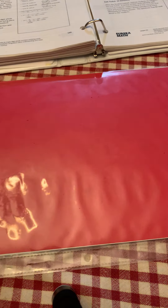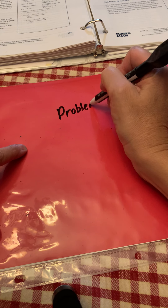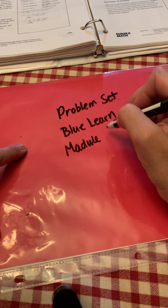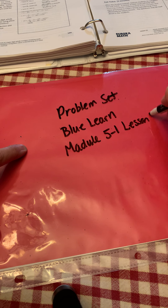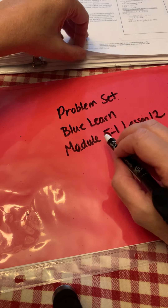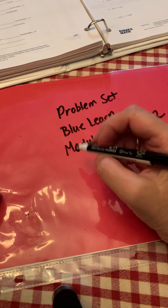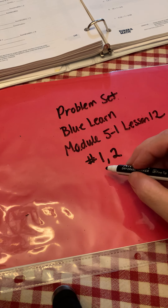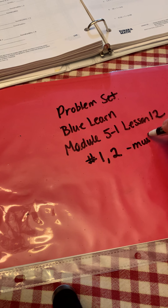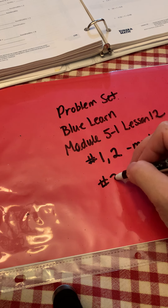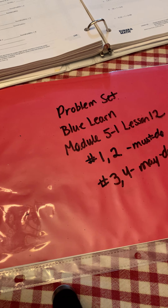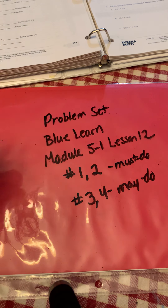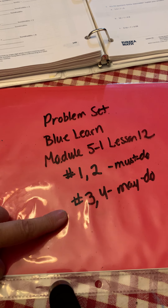Okay, for our next part, I'm going to have you work on your problem set. To find your problem set, you need to go into your blue learn book and find Module 5-1, Lesson 12. Your must-dos are number 1 and number 2. If you really understand it and want to try some more, your may-dos are number 3 and number 4. I will make a video of the answers so you can check them once you finish.